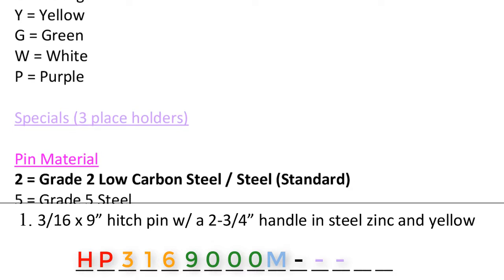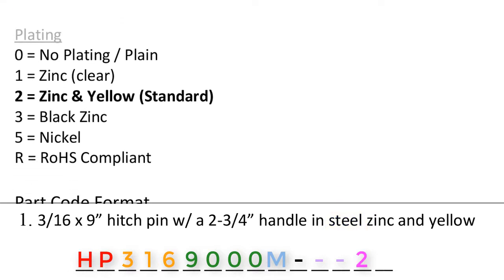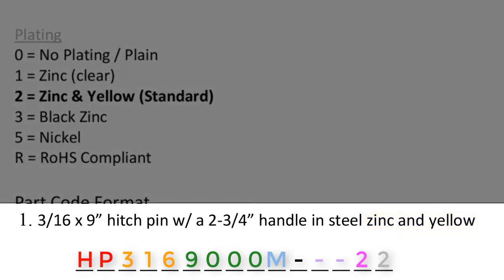Then we move on to pin material. This pin material says steel, also known as grade 2 low carbon steel, or a 2 in a part code. Then we have the plating, called out as zinc and yellow. Zinc and yellow translates to a 2 within the part code. Number 1's part code will read: HP316-9000-M--22.